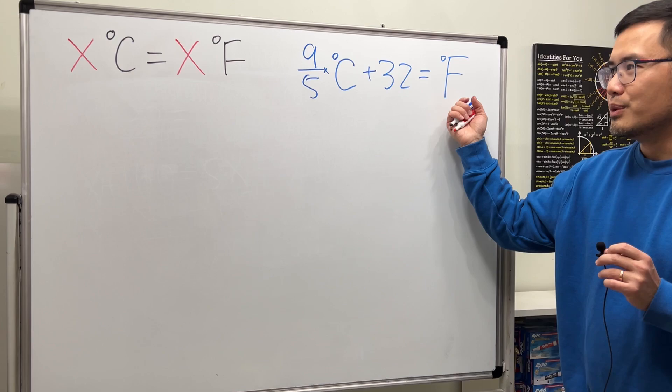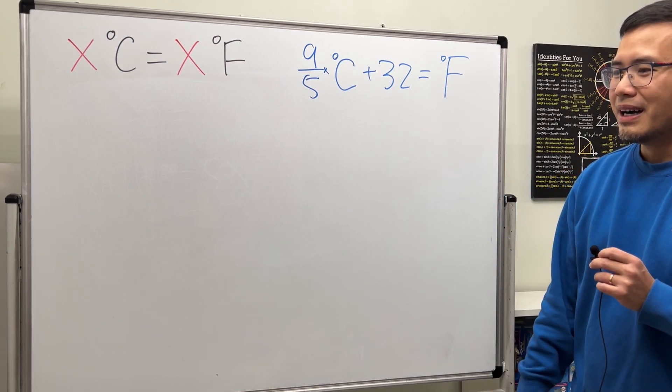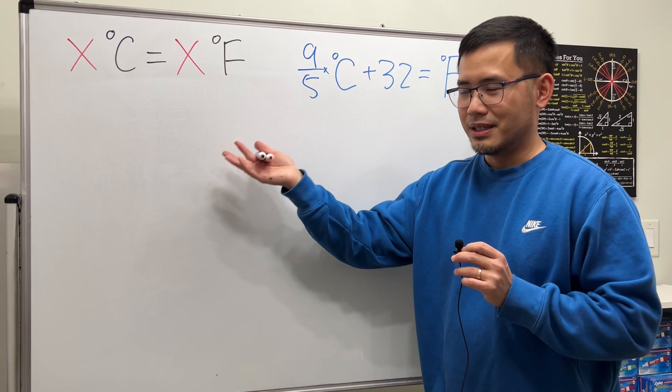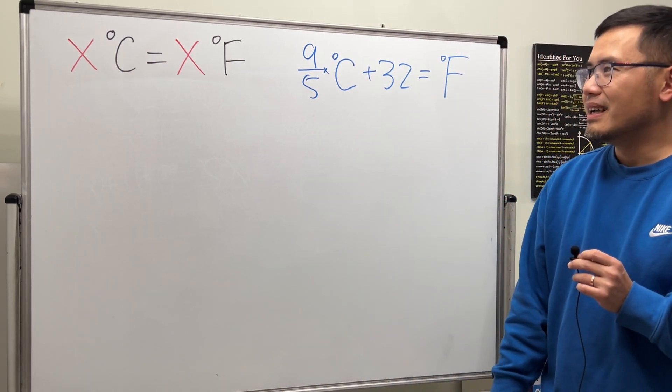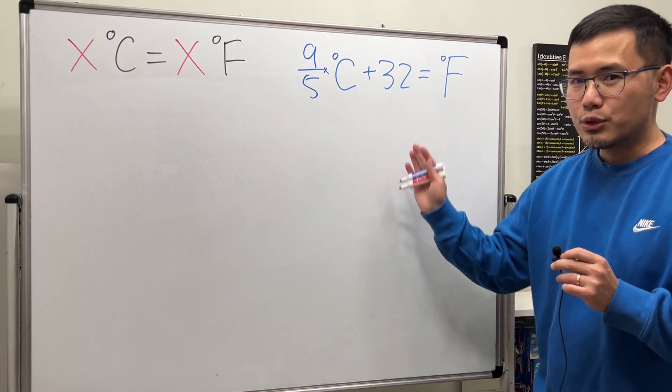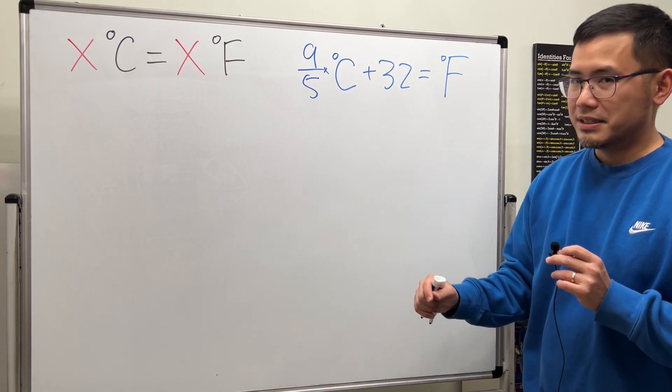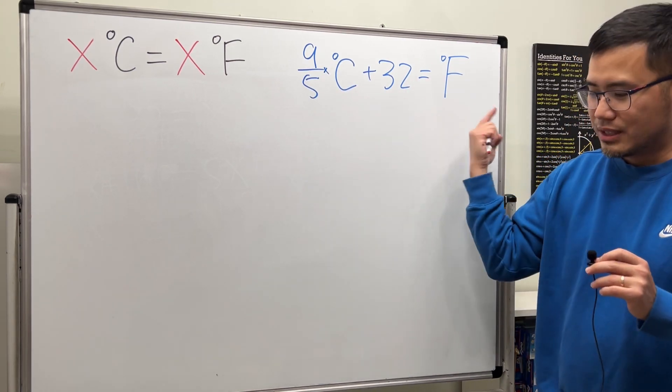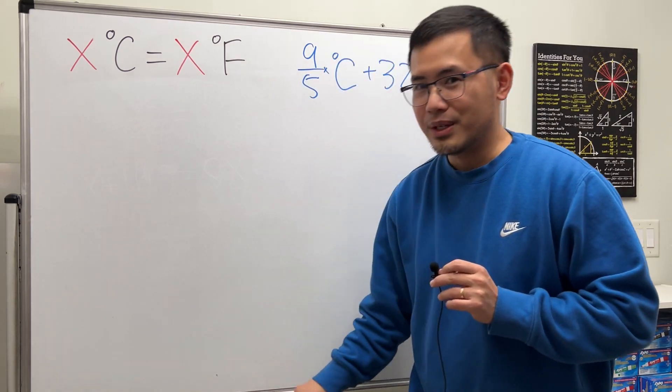I know in the US we use Fahrenheit for temperature, but pretty much anywhere else we use Celsius. There's also another version if you want to isolate the C, but since the post uses this one, I'll just stick with this. Now let's see how we can do it.